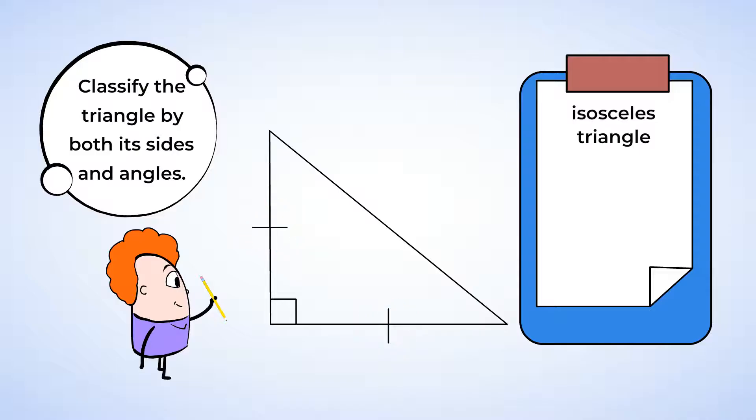Now we can look at the angles. See that small box in one of the angles? That symbol means that the angle is a right angle. That means the triangle has a right angle, so it must be a right triangle. This triangle can be classified as an isosceles right triangle.